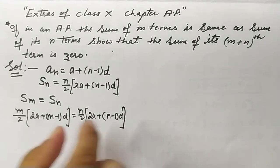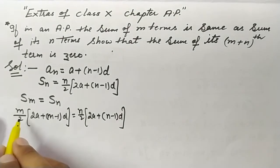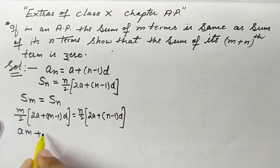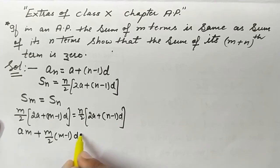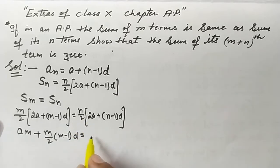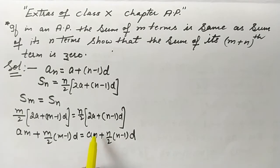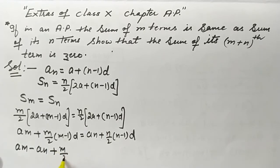We bring all terms to the left-hand side. Expanding both sides: multiplying m/2 into (2a + (m−1)d) gives am + m/2·(m−1)d on the left, and an + n/2·(n−1)d on the right. Moving all to the LHS gives: am − an + m/2·(m−1)d − n/2·(n−1)d = 0.